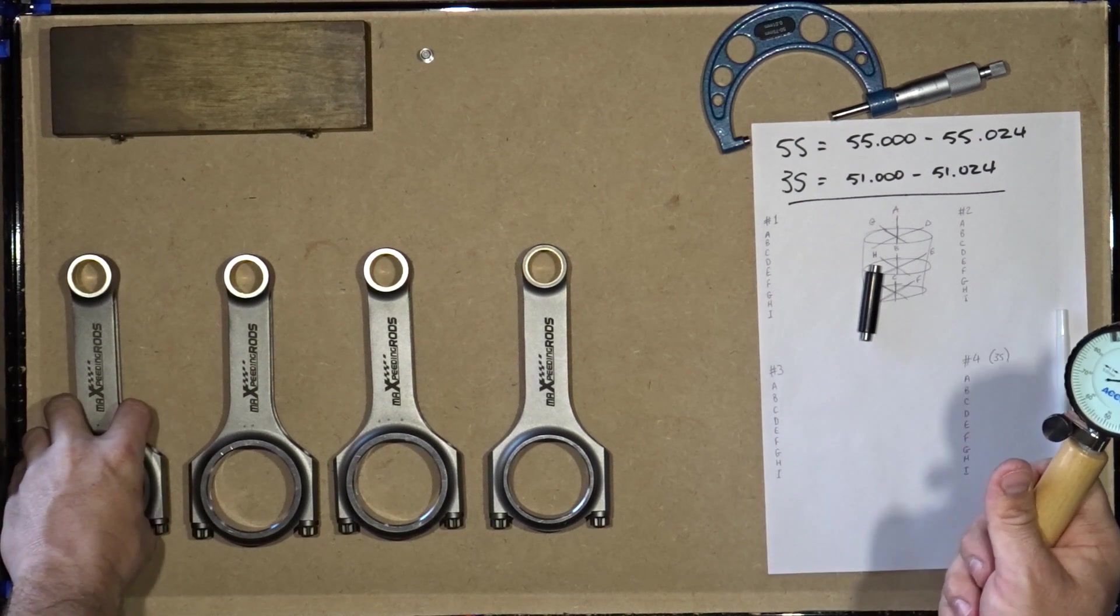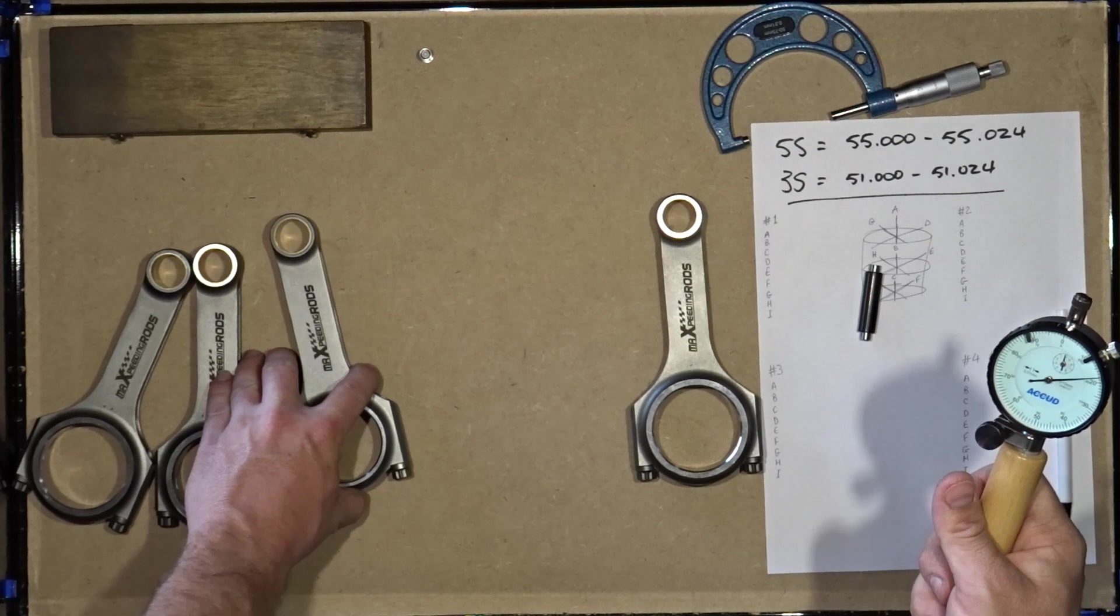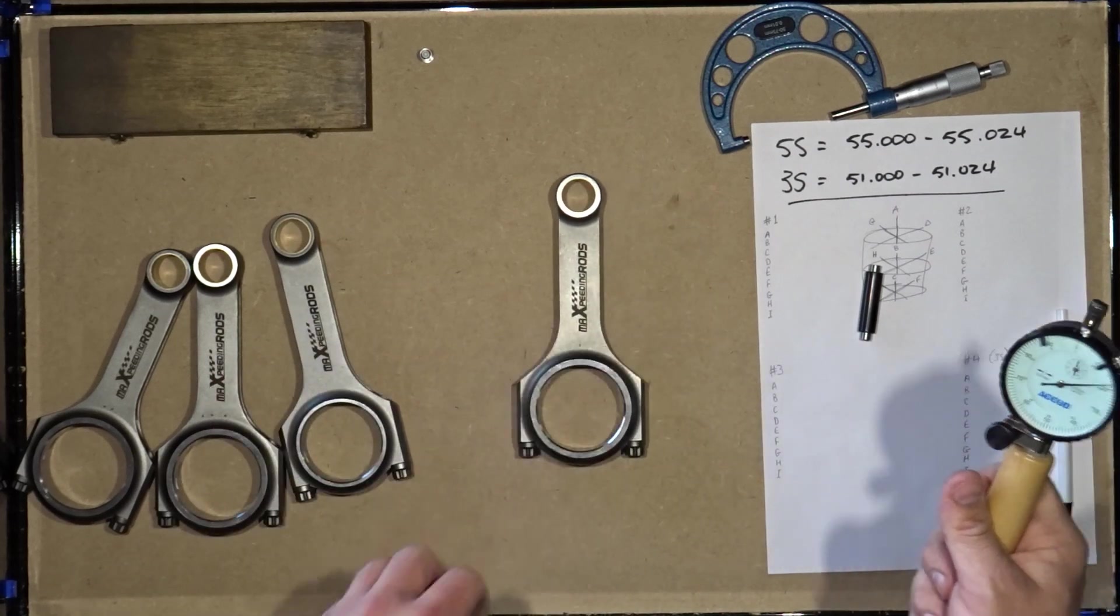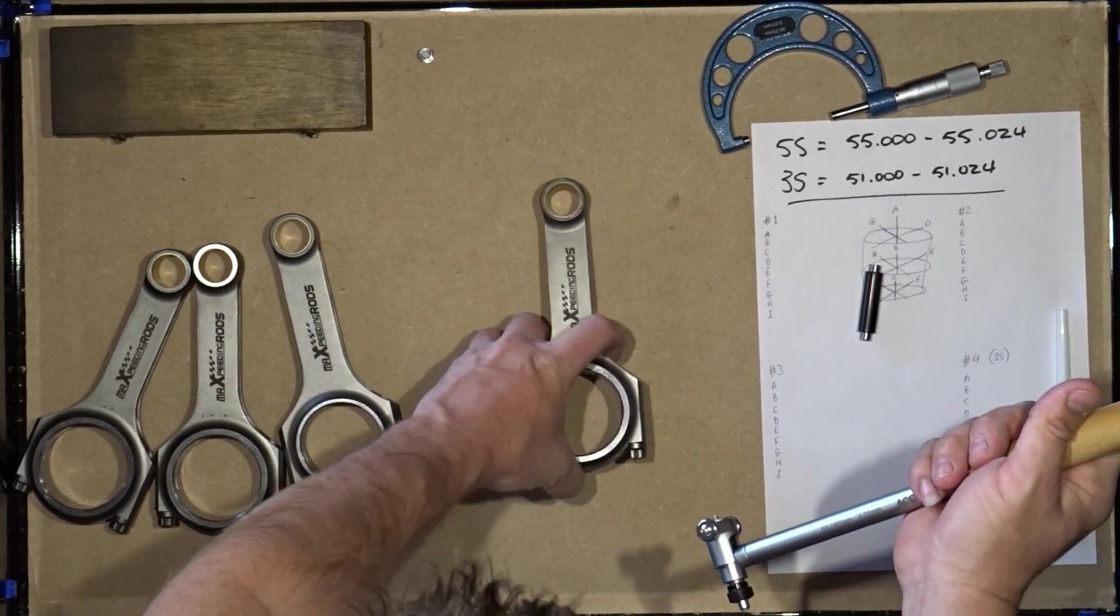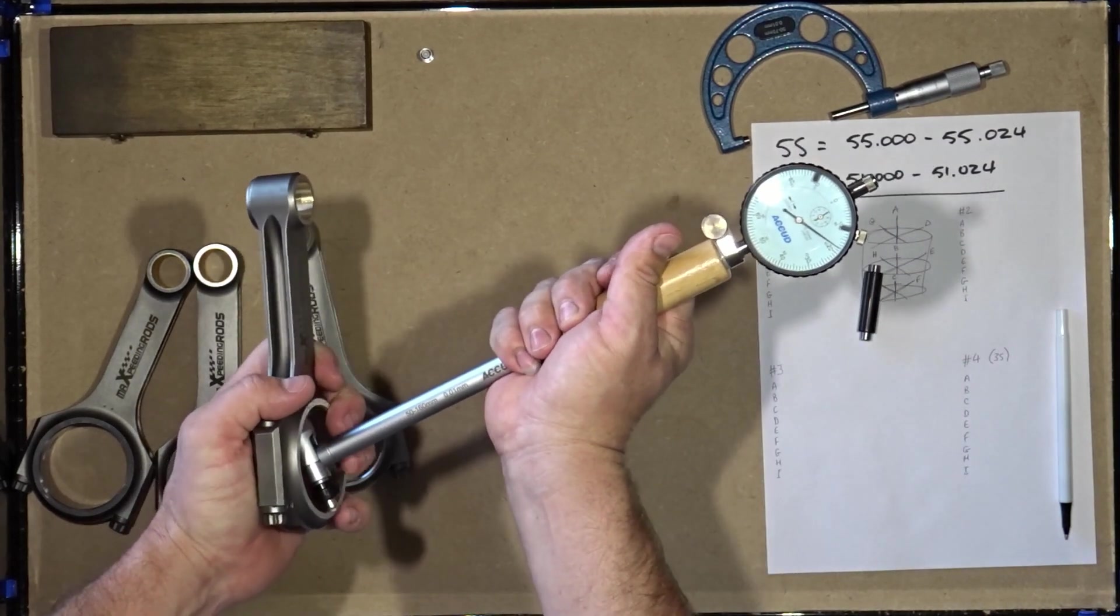Starting with A, B and C, working my way through D, E and F, and finally measuring G, H and I, we can get an idea of the specific roundness and squareness of these holes.